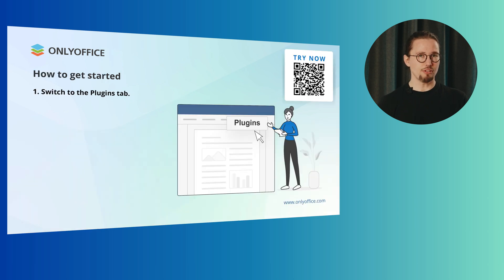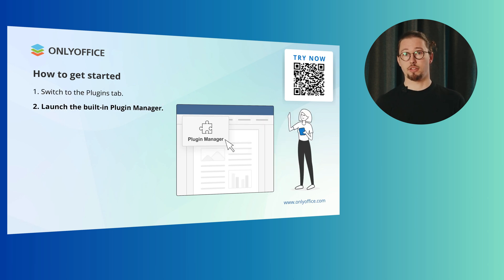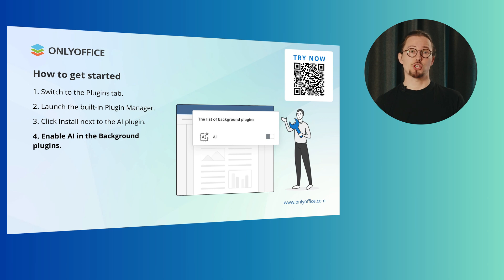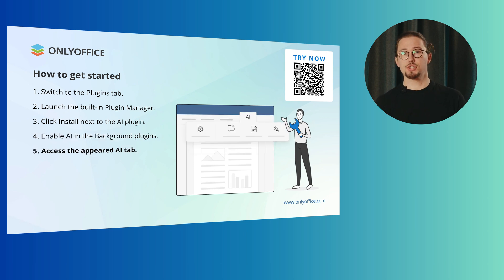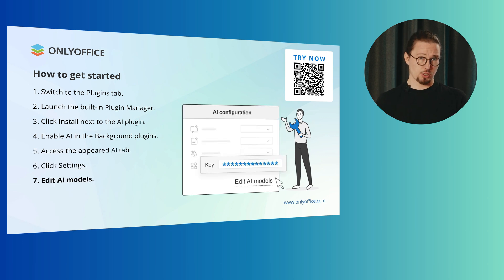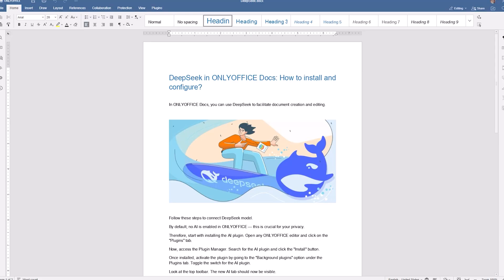Now, let's briefly explore how to get started with the AI functionality in OnlyOffice. Launch the editors and switch to the Plugins tab. Open the plugin manager and install the AI plugin. Open background plugins and enable the switcher for AI. You will see that a dedicated AI tab is now accessible. Open settings on this tab, select AI providers from the list or add new AI models, and finally set the required AI models for different tasks.